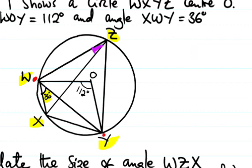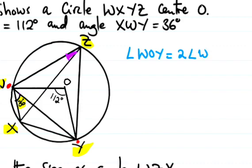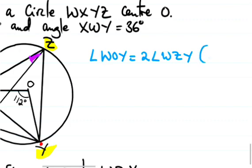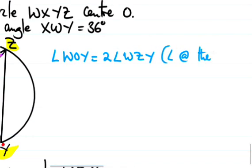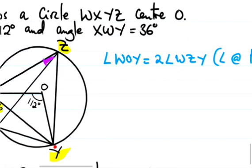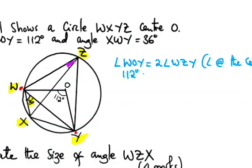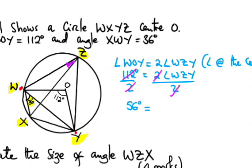Putting that into our equation: angle WOY equals two times angle WZY. So 112 degrees equals two times angle WZY. Dividing both sides by two, we get angle WZY equals 56 degrees.